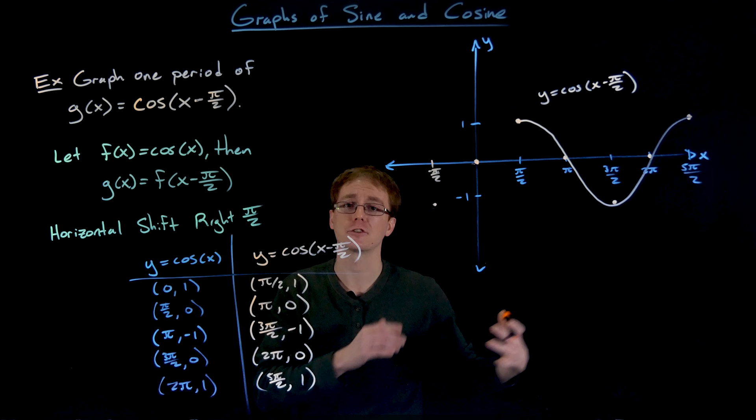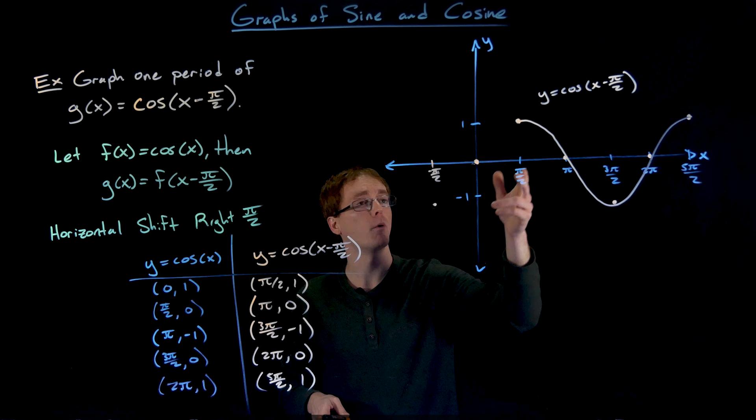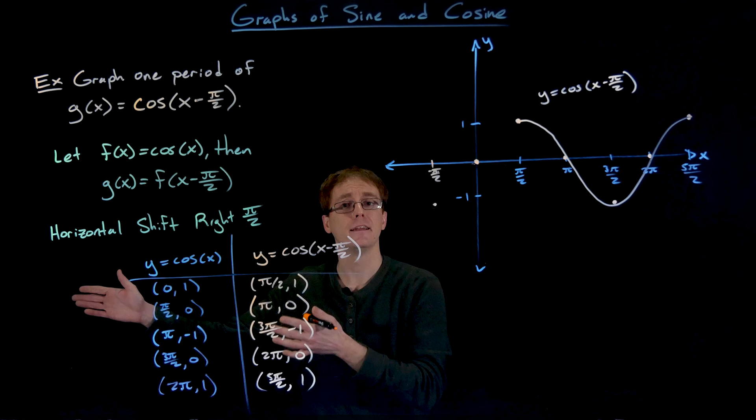We're just basically taking all these points and shifting them one period to the left or one period to the right, and right now our period is still 2π. So just take all these points, add or subtract 2π or any multiple of 2π to their x values, and we get an equivalent point in an adjacent period.